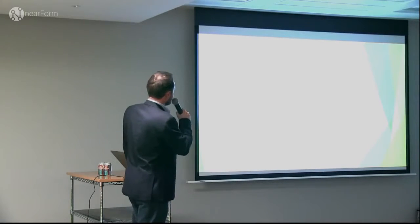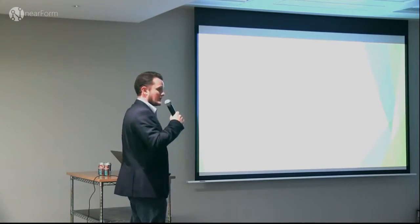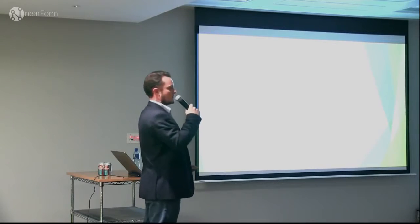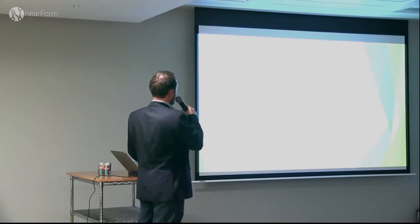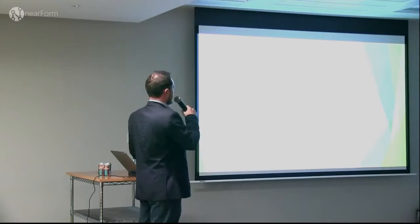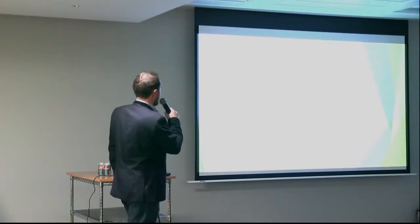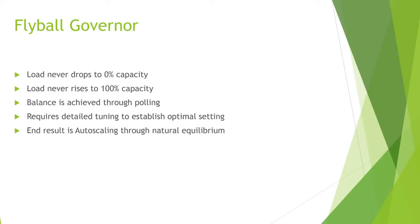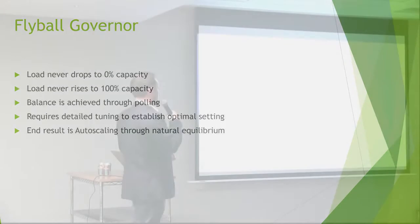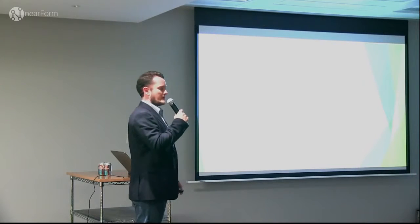What does that mean within the context of microservices? What we want to achieve — ultimately this all leads to autoscaling. What we've experienced is the load never drops to 0% capacity, simply because as the oscillating arms go down, they always let more messages through before 0%. Similarly, we never experience load that rises to or above 100%. This is all predefined by your configuration — for example, 1,000 messages per second might be 100% capacity.